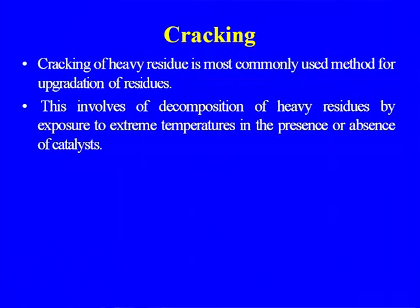Cracking in refinery refers to the cracking of heavy residue to produce lighter products. It is the most commonly used method for upgrading residue, which are low-value products in the refinery. This involves the decomposition of heavy residue by exposure to extreme temperature in the presence or absence of a catalyst. Some thermal cracking processes do not use a catalyst, while other processes use a catalyst — such as FCC, which we will discuss in the next lecture.